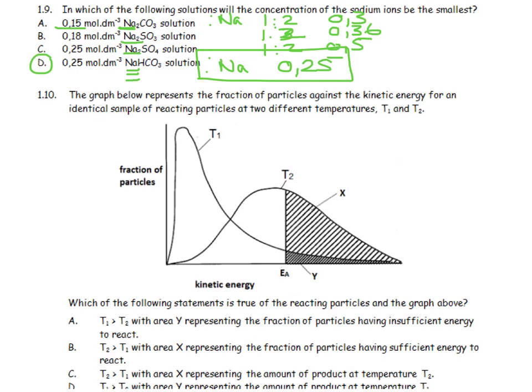The graph below represents the fraction of particles against kinetic energy of an identical sample of reacting particles at two different temperatures. Which of the following statements is true? Well, the first thing is, we need to think about this. T1 has lots with very little kinetic energy. That must be a low temperature because they don't have a lot of kinetic energy. This sample of two has got more particles with a higher kinetic energy. So we are going to say that that is a higher temperature. So T2 is greater than T1. That has to be one of the choices.